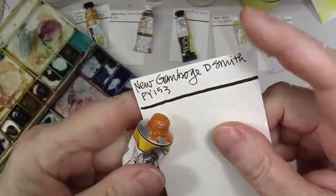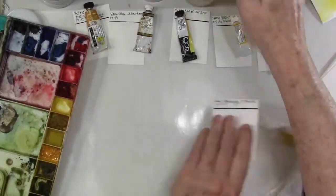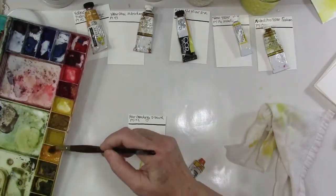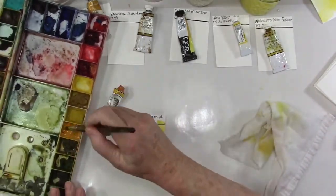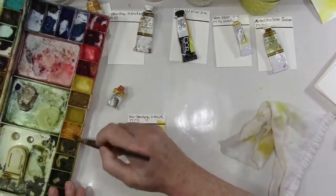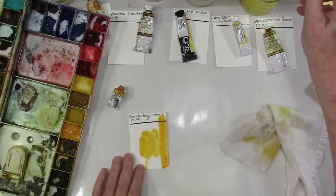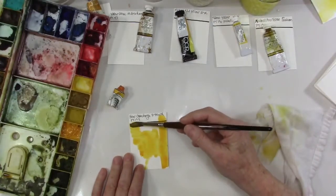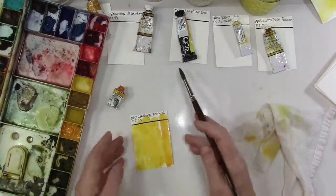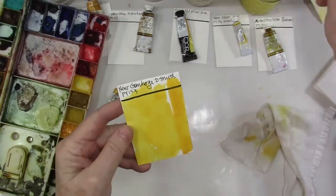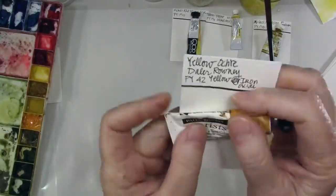Now here's a beauty. This is new gamboge, PY 153. I love this color. It's a warm, warm yellow and it's verging on orange. It's like a yellow-orange, it's a beautiful color. Nice and semi-transparent, I don't know what the actual rating is. I'm just looking at that black line that I draw to see how transparent it is.